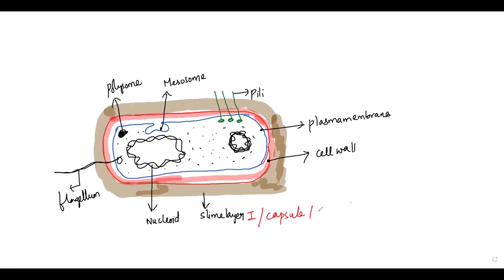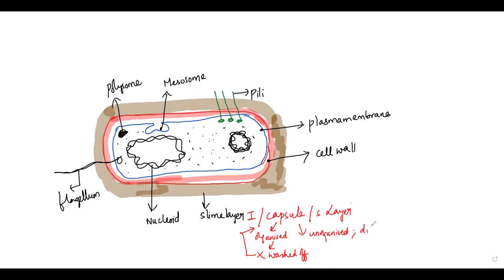You can even call this layer as an S-layer too. Coming onto this capsule — sometimes this may be well organized or unorganized. If it is going to be well organized, it does not get washed off easily during staining techniques, and that is why we call it a capsule. But if it is going to be unorganized and diffusible, then we should call it a slime layer — if something is diffusing and not well organized, then we call it a slime layer.